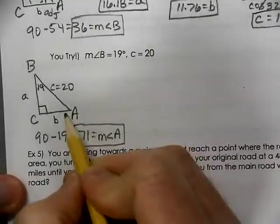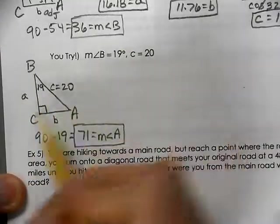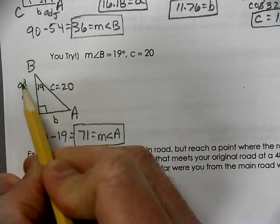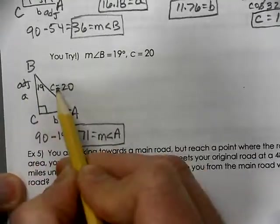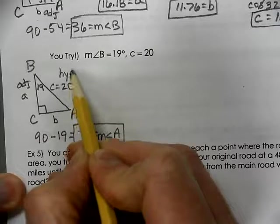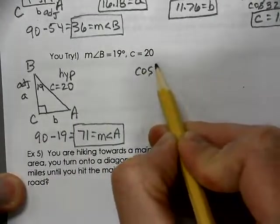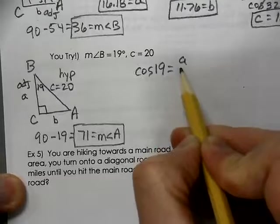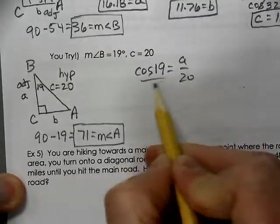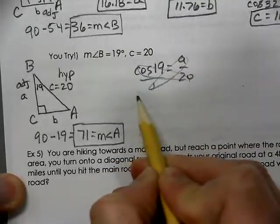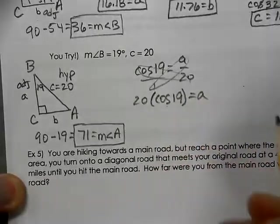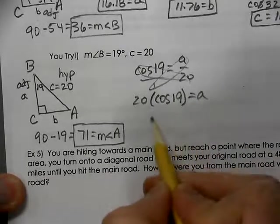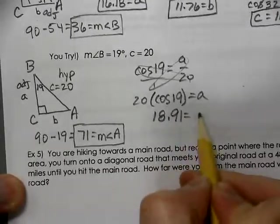To find A, which is the adjacent side to the 19. It's the adjacent side to the 19. Side C is the hypotenuse. So again, we're going to use cosine of 19 to be adjacent over hypotenuse. Cross multiply. 20 times the cosine of 19 equals A. And using your calculator, you'll get 18.91.